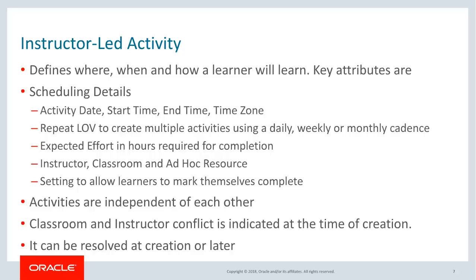An instructor-led offering or a blended offering has instructor-led activities. An instructor-led activity defines where, when, and how a learner will learn. Key attributes include scheduling details such as activity start date, start time, end time, and time zone. There is a repeat LOV which can be used to create multiple activities if the activity repeats at a certain frequency such as daily, weekly, or monthly. For example, there could be a classroom training spanning five days of a week or every Monday in a given month, and specialists can use the repeat LOV to prefill information for such repetitive activities.